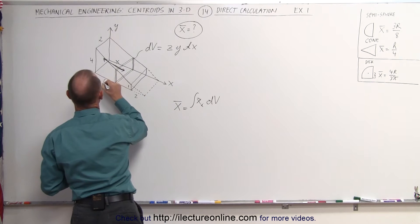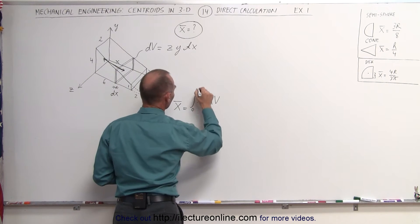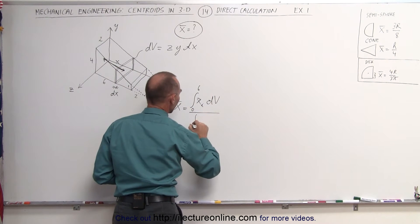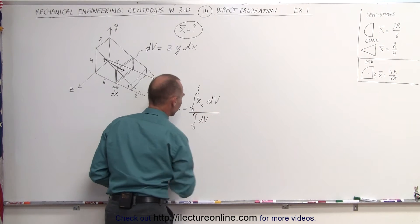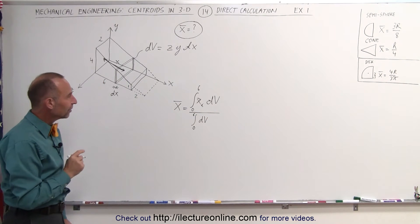Let me move that a little bit so we don't get confused. So from 0 to 6, and we divide that by the integral of the dv from 0 to 6. So that's how we find the centroid.